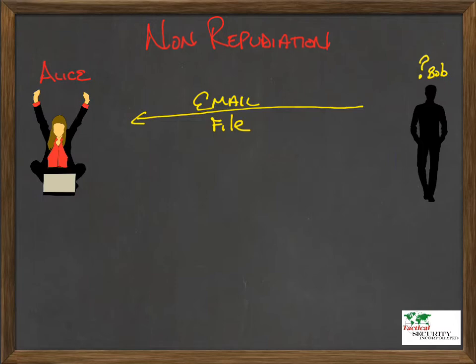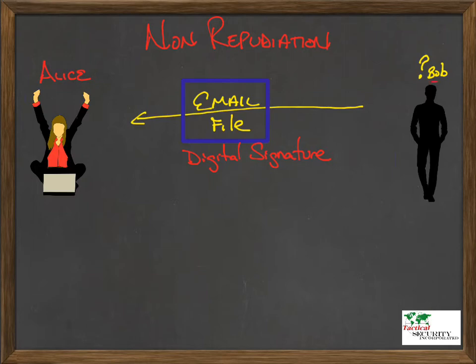With non-repudiation and cryptography, what we're going to look at is how do we put any protection mechanisms around the file so that we know that who sent that file is exactly who they say they are. What we're going to add is going to be a digital signature. In order to create a digital signature, what Bob would do is actually encrypt the hash of that file using his private key.